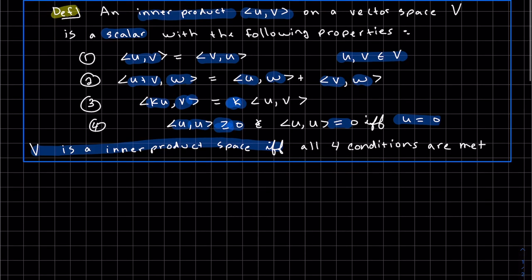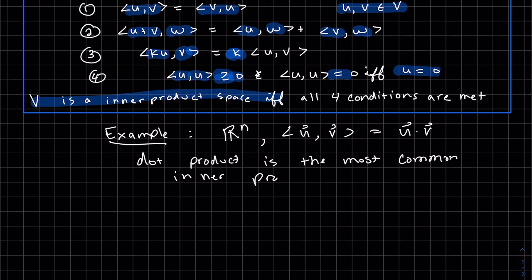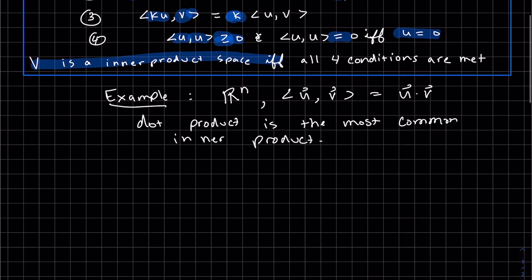So one example is R^n. In R^n, we would have u and v be vectors. And so the inner product of u and v, remember it has to be a scalar, it would be the dot product. So in R^n, the dot product is the most common inner product, but there could be more, and you can define your own.